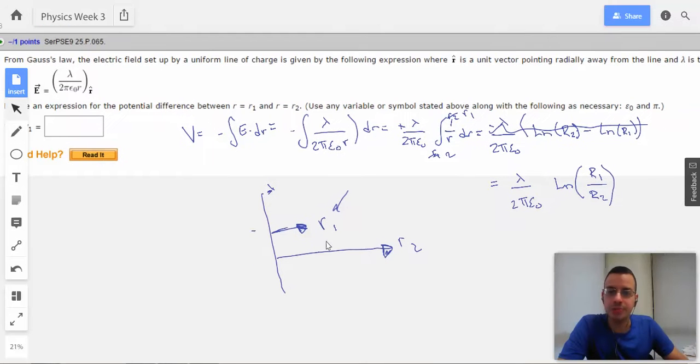So that R1 would have a higher potential than R2. So the potential difference between R1 and R2 I'm going to assume means from R1 to R2.